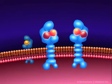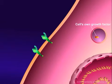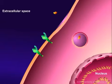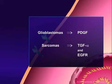Malignant cells generate many of their own growth signals, which allows them to divide with reduced external growth stimulation. Some cells are able to produce their own growth factors and stimulate their own growth — this is called autocrine stimulation. For example, glioblastomas express platelet-derived growth factor, or PDGF. Sarcomas express tumor growth factor alpha, or TGF-alpha, as well as epidermal growth factor receptor, or EGFR.